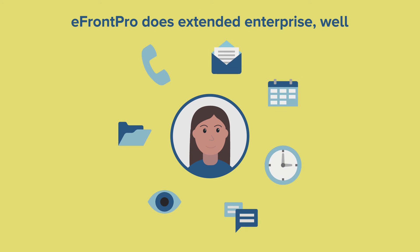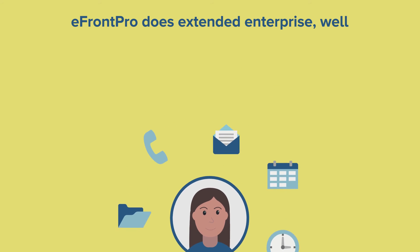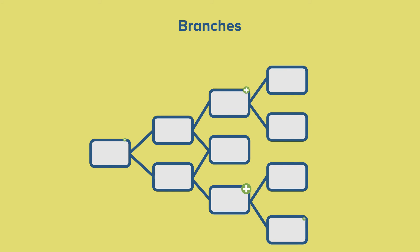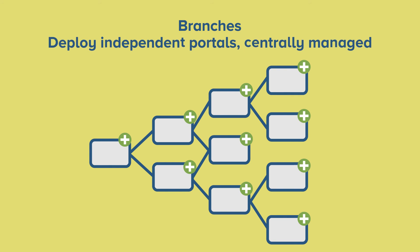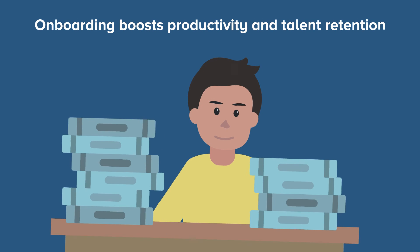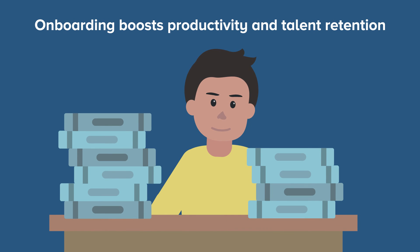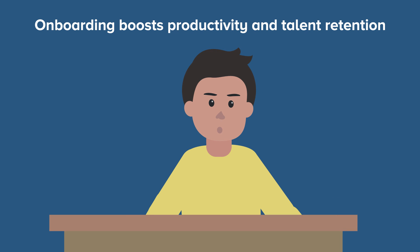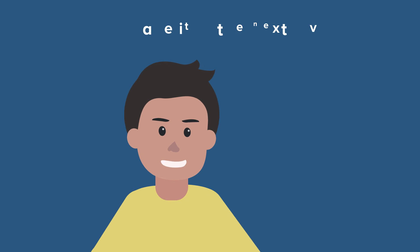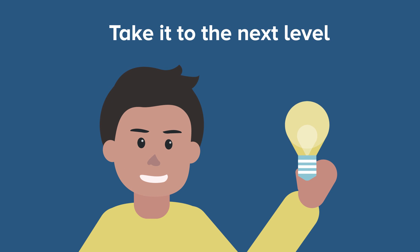And if you're looking into covering the complex onboarding needs of the extended enterprise, look no further. eFront Pro, through its powerful Branches feature, lets you deploy employee orientation material and training courses to any number of privately branded portals, each extremely customizable and corresponding to a unit of your business network. Onboarding helps make employees productive quickly, and implementing it through a platform like eFront Pro allows you to take it beyond simple information dumping by making it part of your overall talent development strategy.